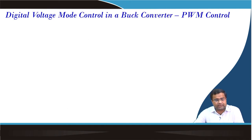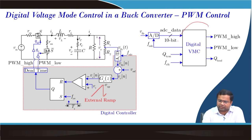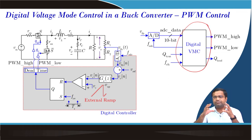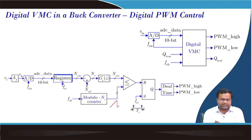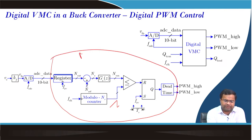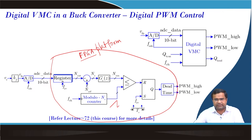We have discussed digital implementation of PWM control including how to write Verilog code and synthesize it for FPGA-based prototyping. The inner circuit details inside the FPGA have been covered, and we implemented this on an FPGA platform. These topics were covered in Week 8, specifically lectures 72 through 75.